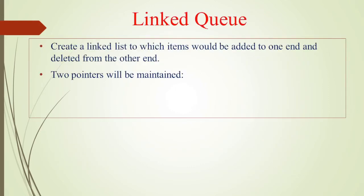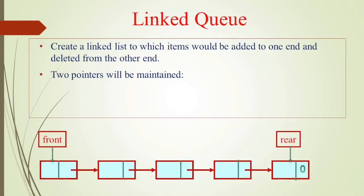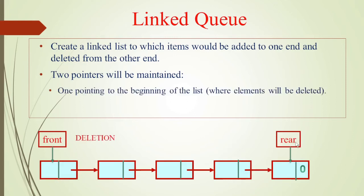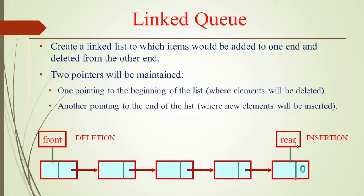Now we will see the linked queue. We are creating a linked list where items will be added at one end and deleted from the other end. There is a linked list with two pointers: front and rear. One points to the beginning of the list for deletion, and one points to the end of the list for insertion. In a linked list we can easily delete from the front, and the queue uses rear for insertion.